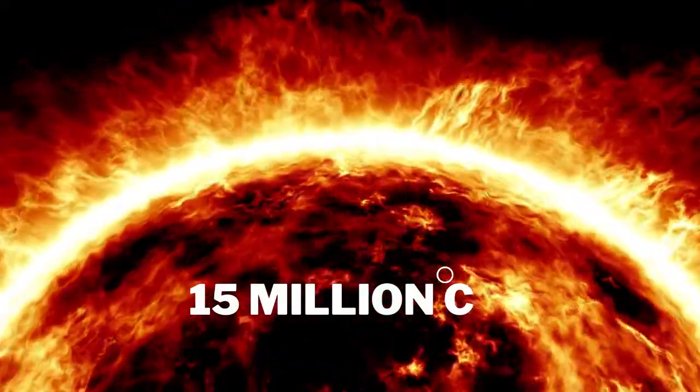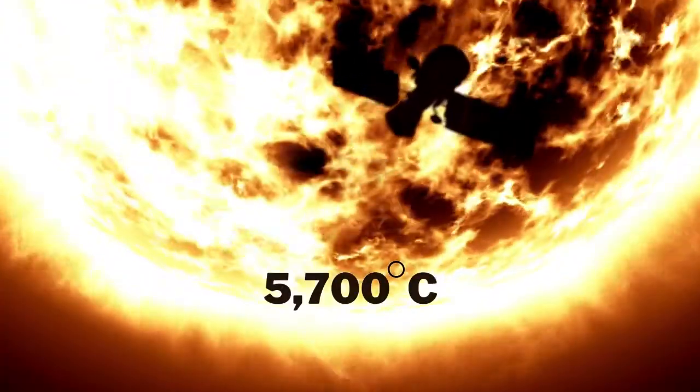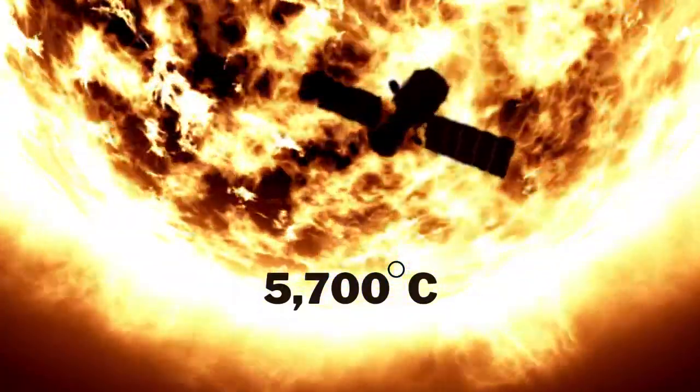This explained how the Sun could keep shining for billions of years. It all fits together. The temperature in the center of the Sun is 15 million degrees Celsius, but the temperature at the surface is much lower at 5,700 degrees Celsius.